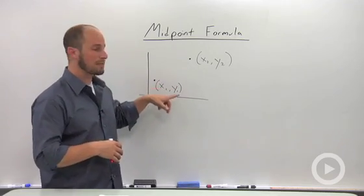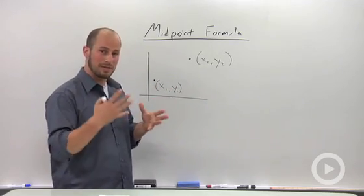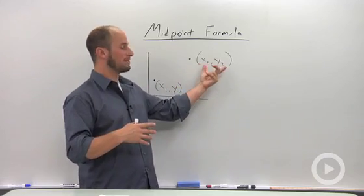So in this case, I have the point x1, y1. We don't know what the coordinates are, but they each have an x-coordinate, y-coordinate, and the point x2, y2.